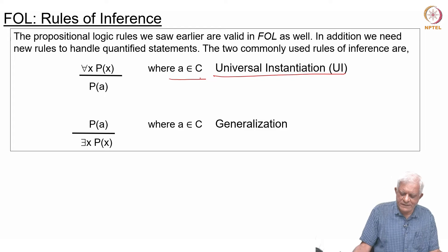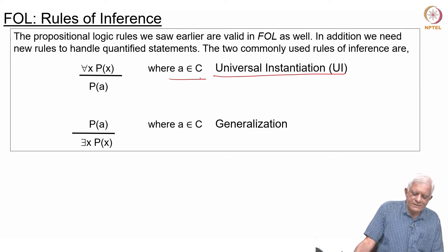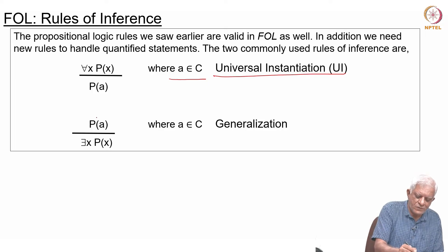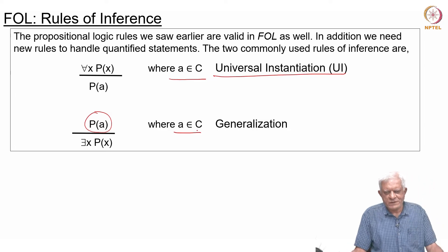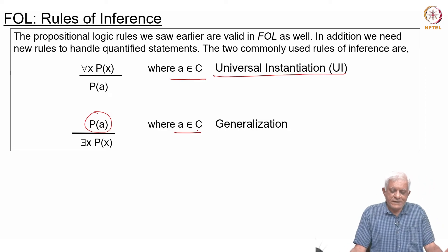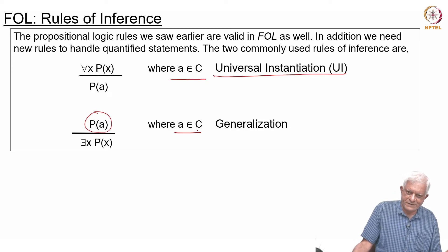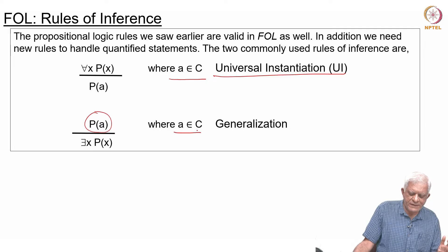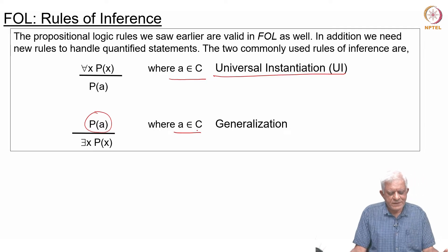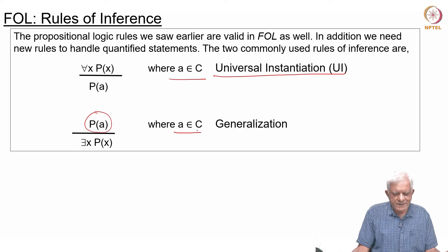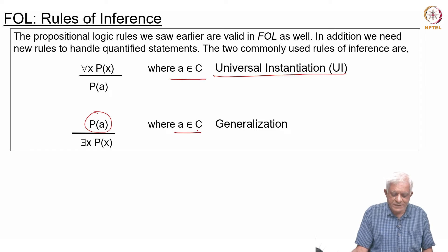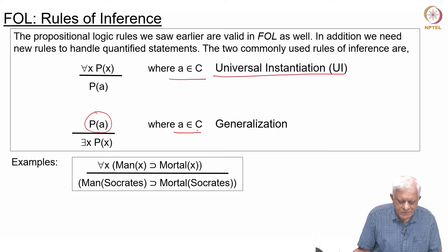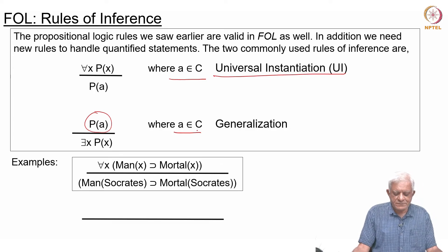Another rule that we use is Generalization, which says that if P(a) is true for some a where a comes from the set of constants that we know—known individual constants or known individuals—then we can say that there exists an x P(x) essentially. Again, it makes sense because when you say there exists an x P(x), then we are saying there is at least one individual such that P(x) is true, and we started off by saying that P(a) is true essentially. These are the things we need because we are doing everything formally.